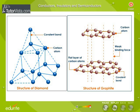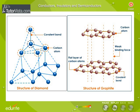In the structures shown here, observe that in Diamond each Carbon atom is bound to four other Carbon atoms. All four valence electrons are used in bond formation. Therefore, Diamond is an insulator of electricity.